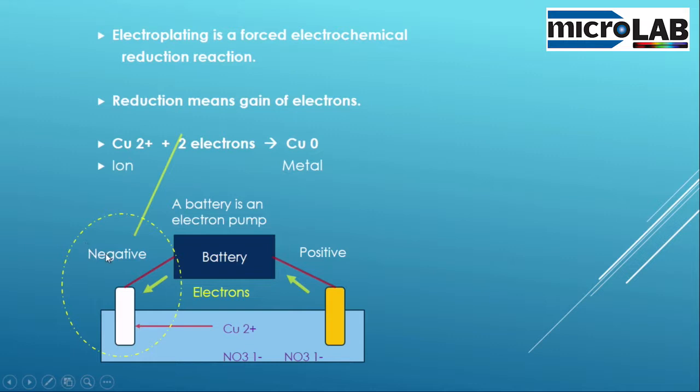And what's going on here on this side of the thing, this is the key. The battery is an electron pump. It's pushing electrons out the negative side onto the key. And the copper ions in the solution pick up electrons and become copper metal. And that's what you saw on the key.